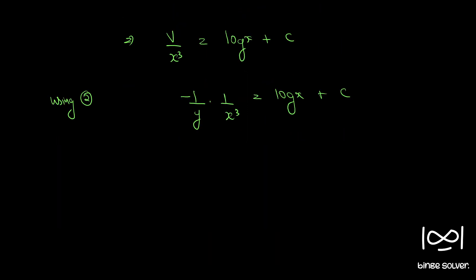We can also write, if you multiply throughout by -1, we can write this as x⁻³·y⁻¹ = -log x + C₁, where C₁ = -C, an arbitrary constant. So this is the final solution.